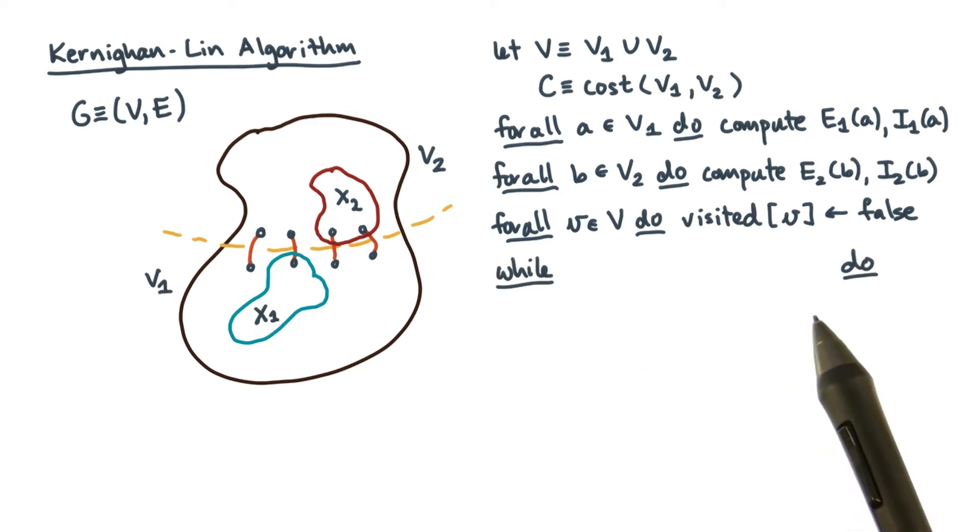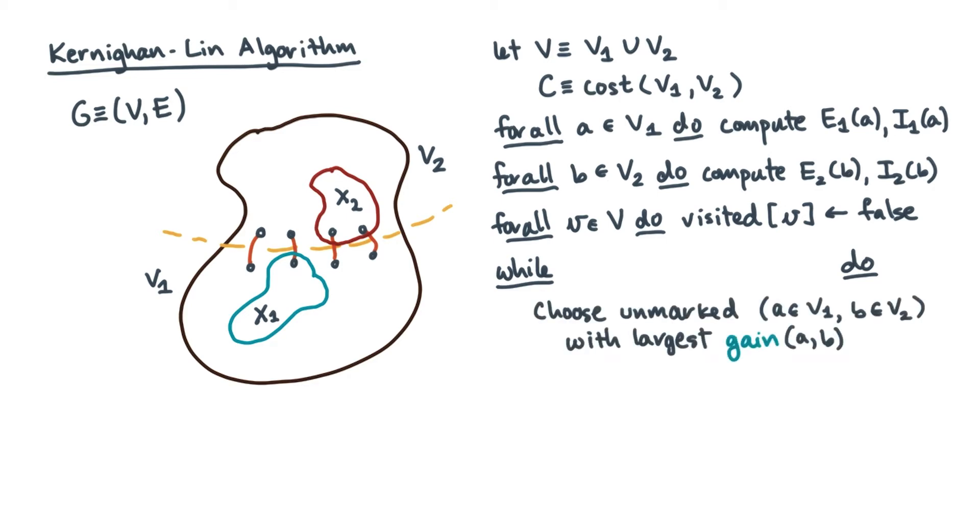I'll fill this condition in momentarily. Go through every pair of unmarked vertices and pick the one with the largest gain. Mark that pair as visited. Now go through and update all the internal and external costs as if A and B had been swapped.